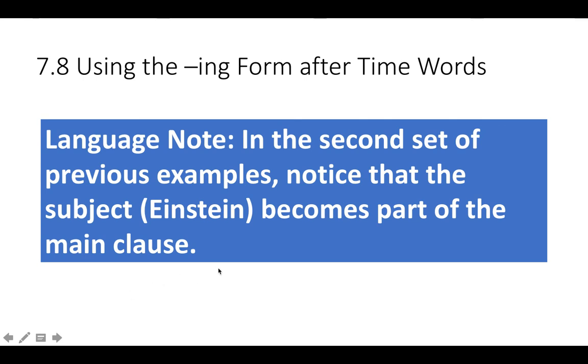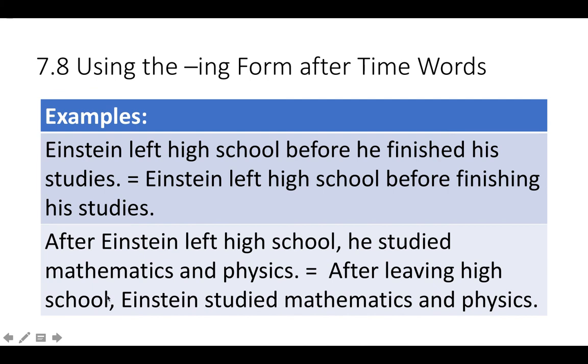And in the second set, notice that Einstein becomes part of the main clause. When you do this, you have to think about how to use the names so it makes very clear who you're talking about. So when I said after leaving, I left out the subject, Einstein, so I want to put Einstein here instead of he, so that the person I'm talking to still knows that I'm talking about Einstein.